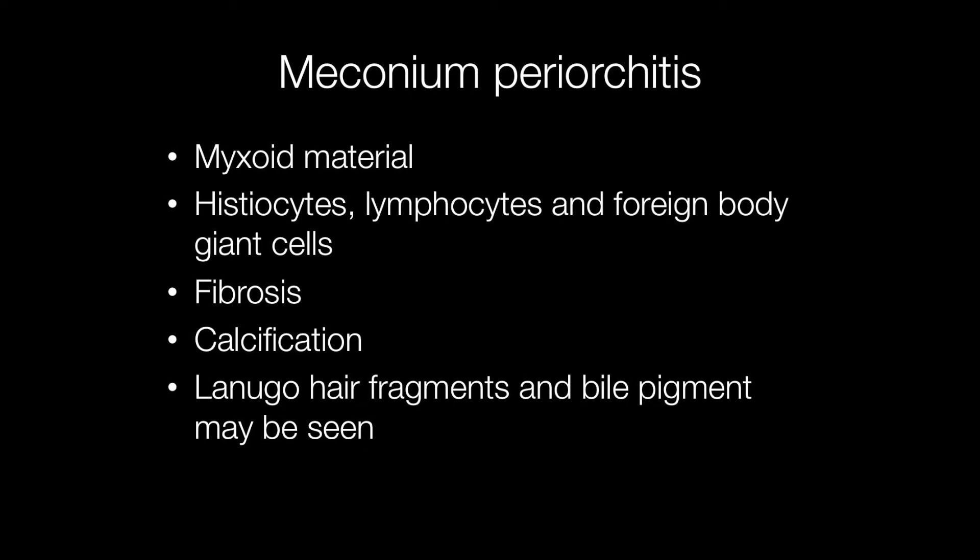Histologically, meconium periorchitis is characterised by myxoid material containing histocytes, lymphocytes and foreign body giant cells. There are areas of fibrosis, areas of calcification, and lanugo hair fragments may be seen. Bile pigment may also be present.